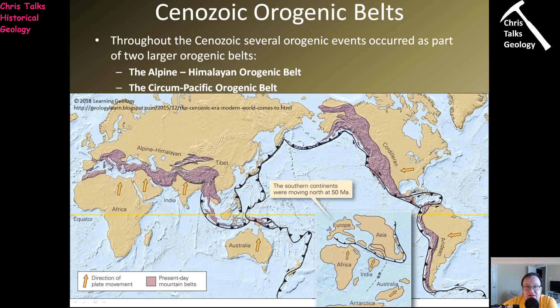One is called the Alpine-Himalayan Belt and the other is the Circumpacific Orogenic Belt, also referred to as the Ring of Fire. The Ring of Fire starts at the southern tip of Chile, runs all the way up through South America, Central America, North America, across the Bering Sea, down through western Russia into Japan, the Philippines, Papua New Guinea, past Tonga and Fiji, and around New Zealand — one semi-continuous belt of subduction and volcanic activity.